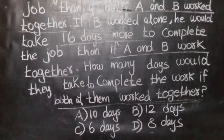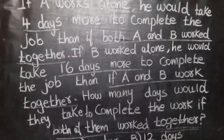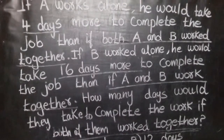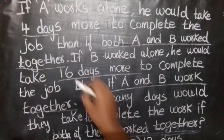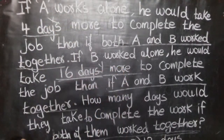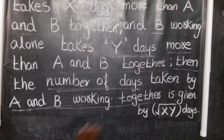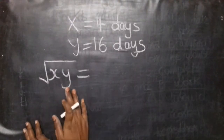We will find out using the shortcut rule. Apply the formula for A and B. A is 4 days more and B is 16 days more. Apply the formula in a few seconds using the shortcut. Root of X times Y — root of 4 multiplied by 16.